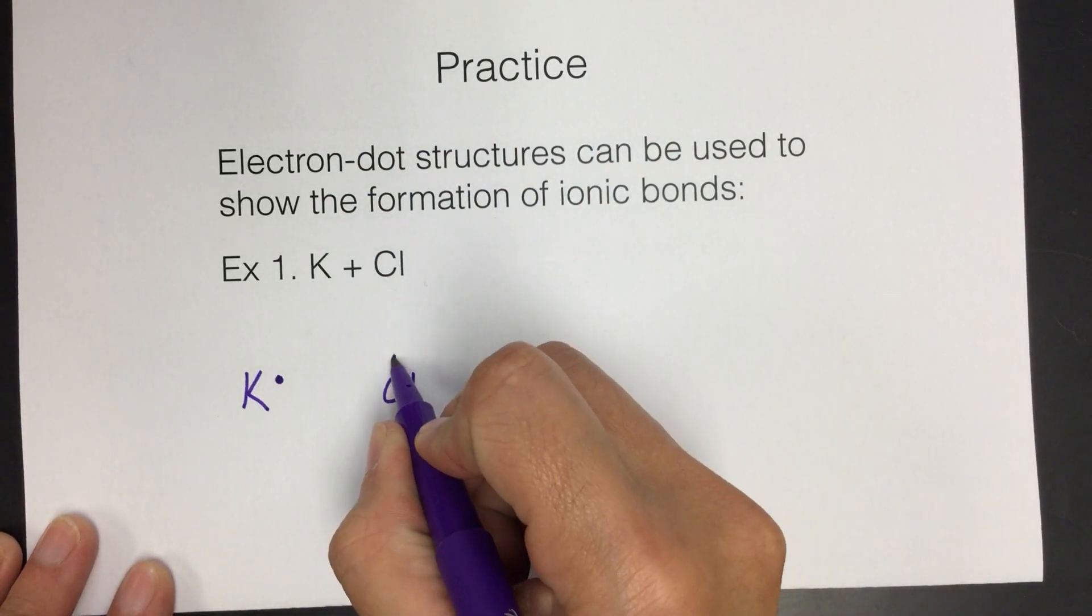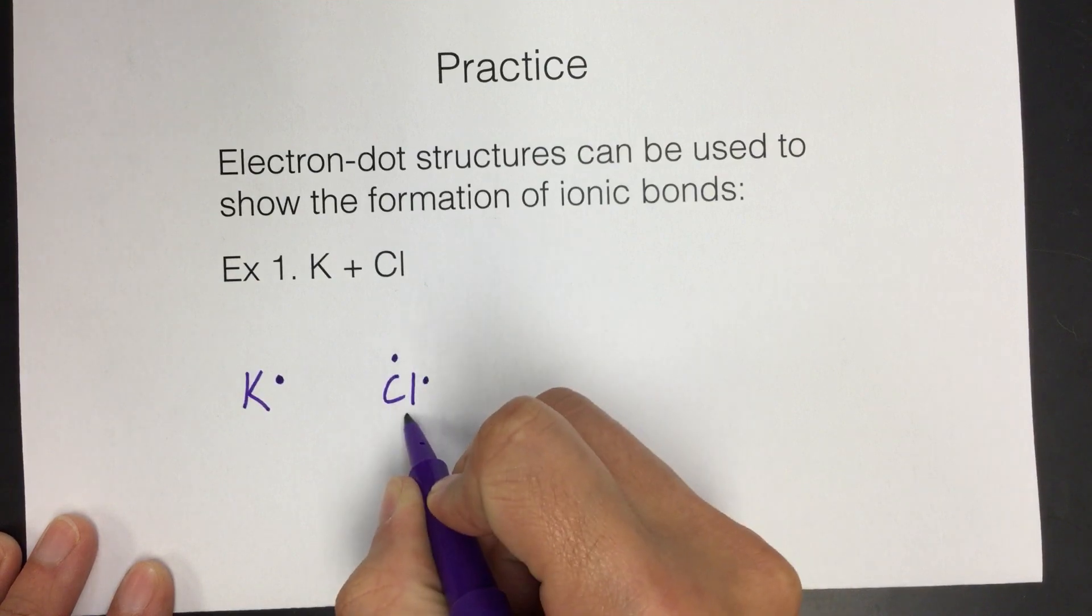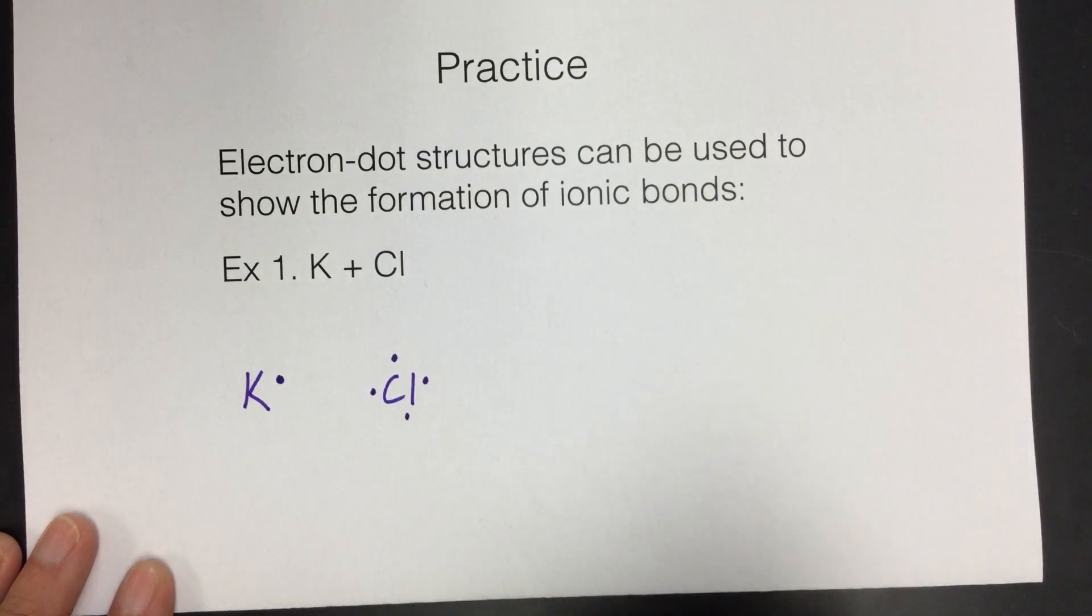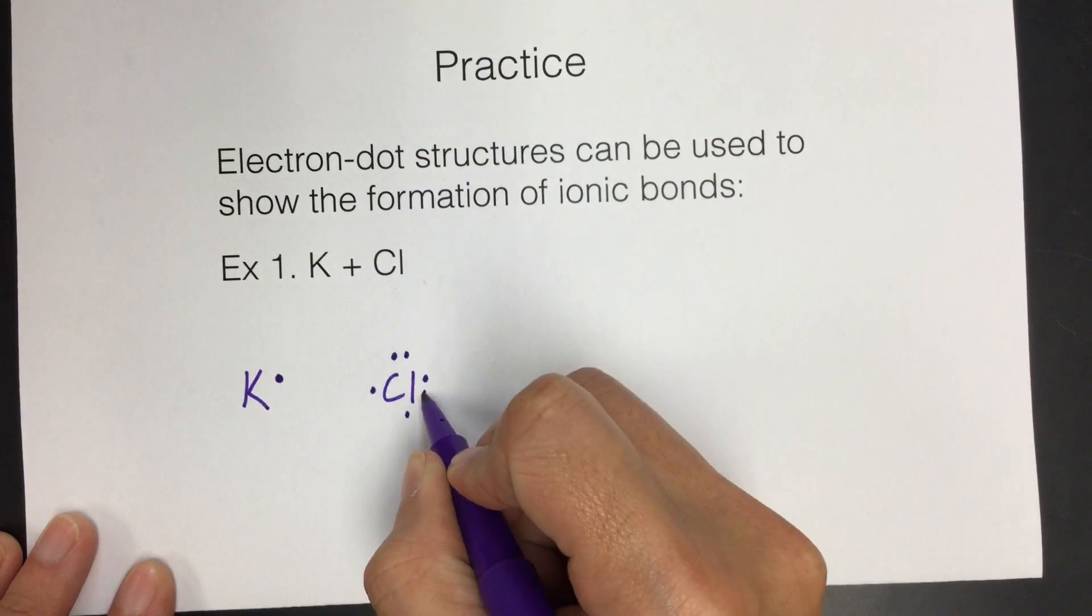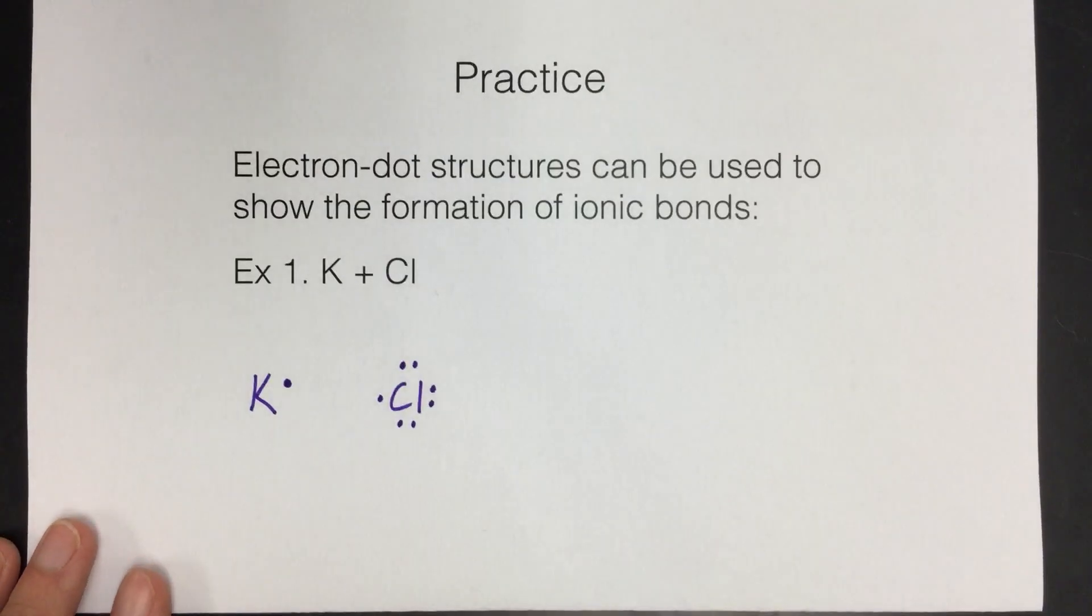Remember how we do that, we'll put a dot on each side, 3, 4, and only then can we double up, 5, 6, 7. So we have something like that.